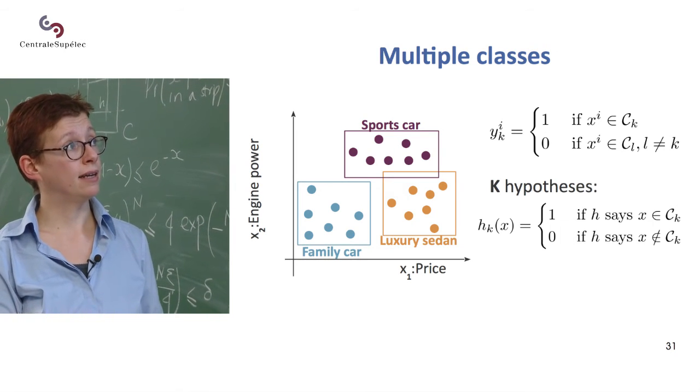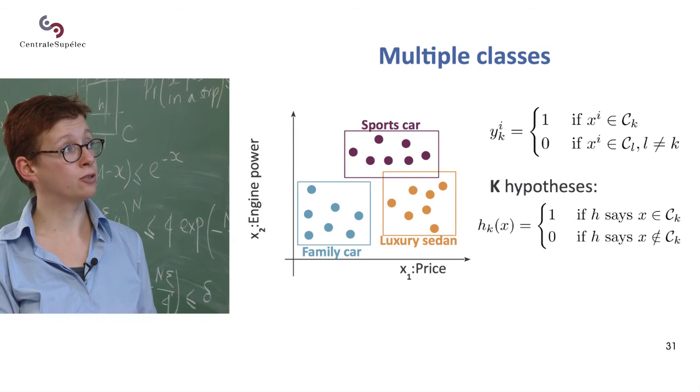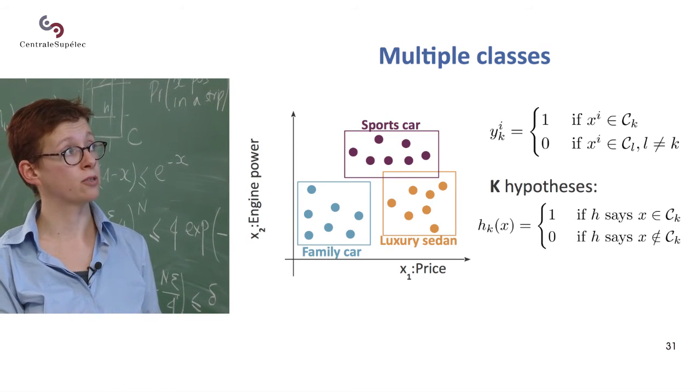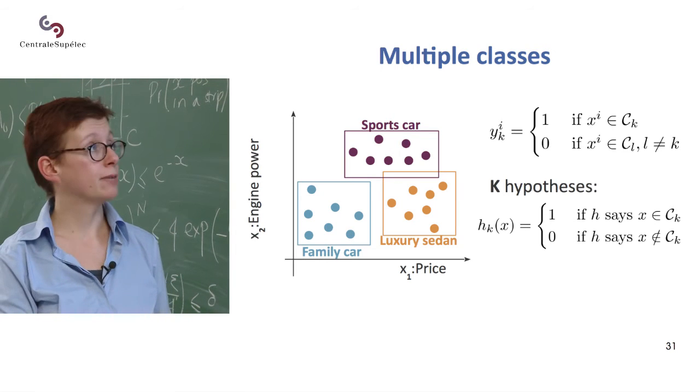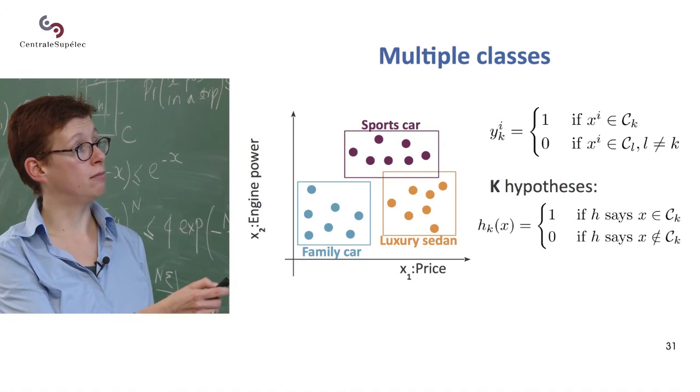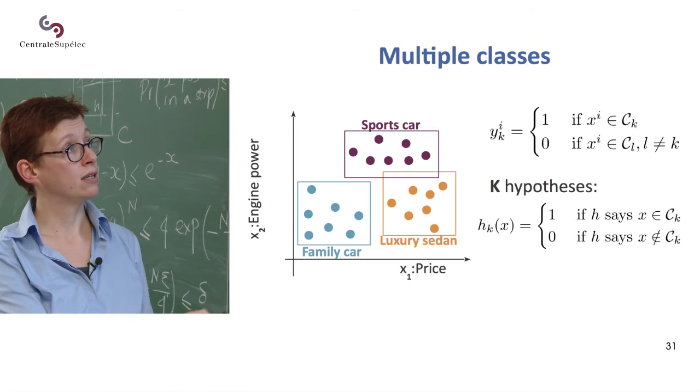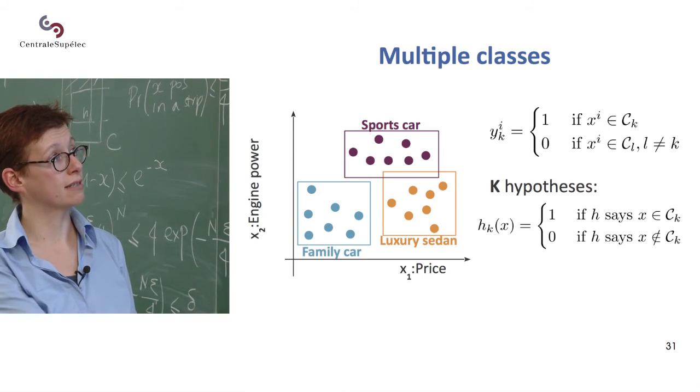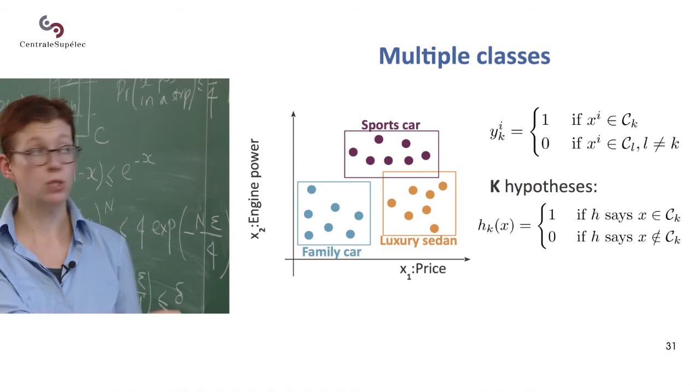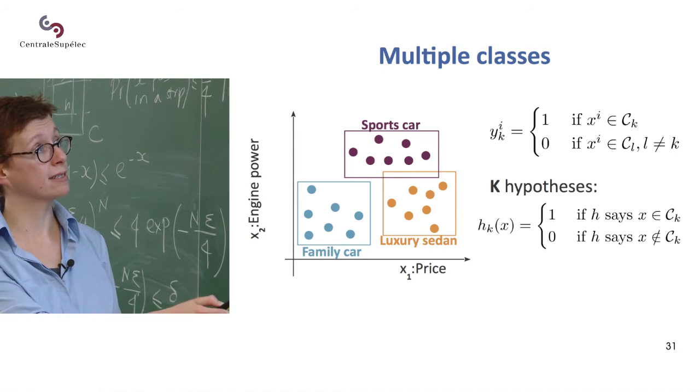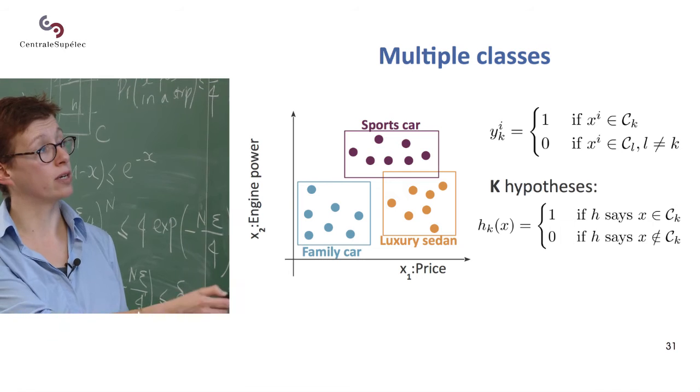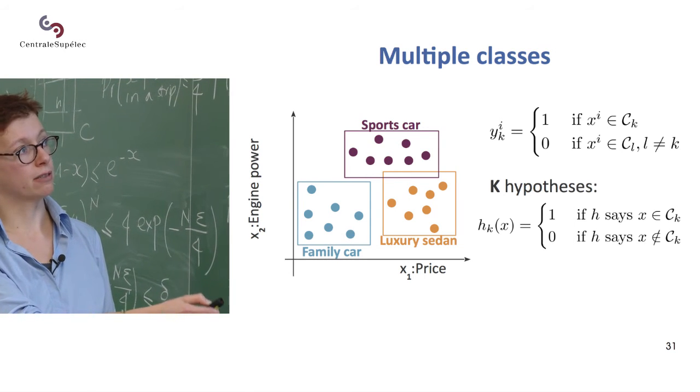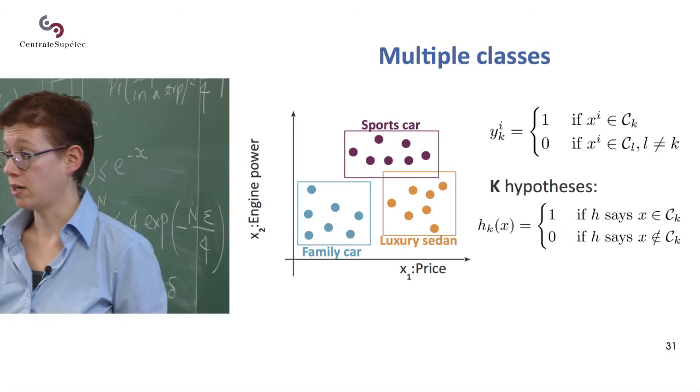So you say for class, so if k equals one corresponds to family cars, we say we're trying to separate family cars from all the other cars. So we label those things as positives and all these other things as negatives. And then we do this for k equals two, sports cars. Sports cars are positives. Those are negatives. And then for k equals three, luxury sedans. So now we have three problems. They're, of course, related to each other.